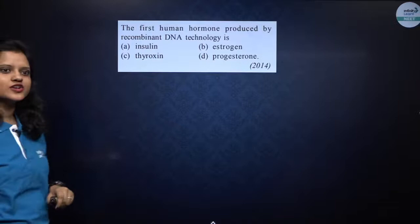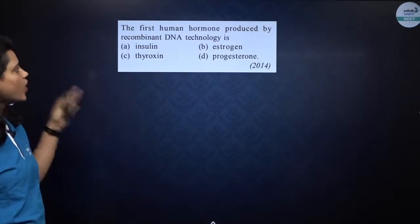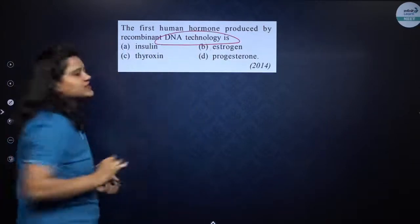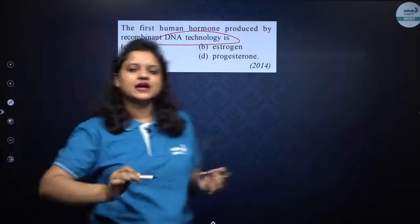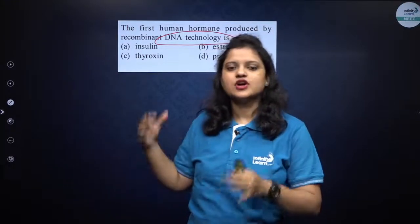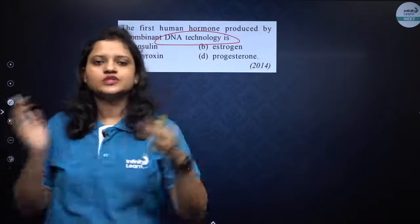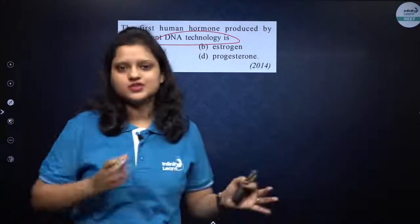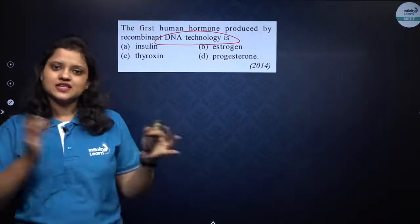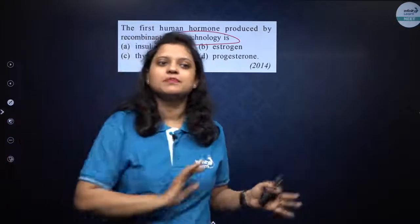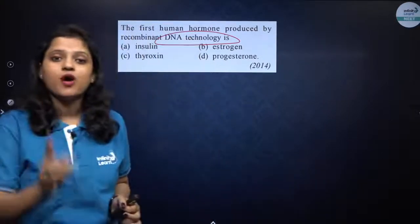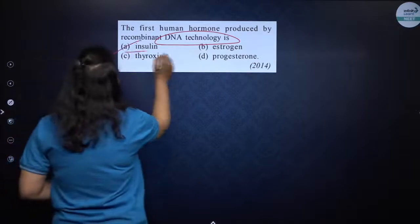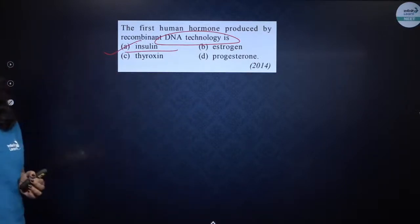Next question: the first human hormone produced by recombinant DNA technology. We have discussed that the first hormone made by biotechnology — by Eli Lilly company — was insulin. Insulin has three chains: A, B, and C. The C chain is present in pro-insulin (inactive form), and it is activated by removal of the C-peptide. Disulfide bonds are present between A and B chains. The correct option is insulin.